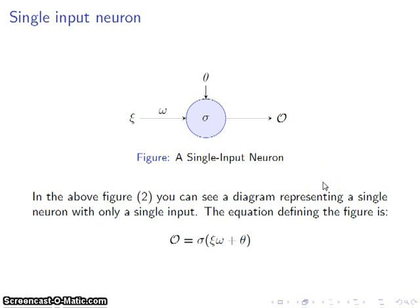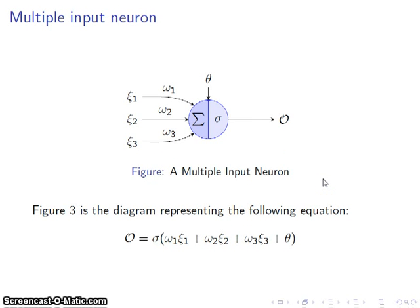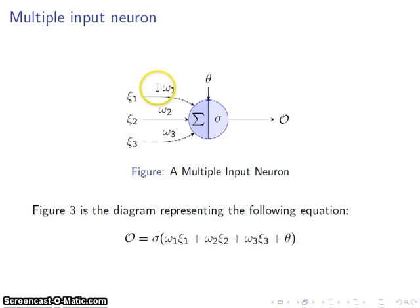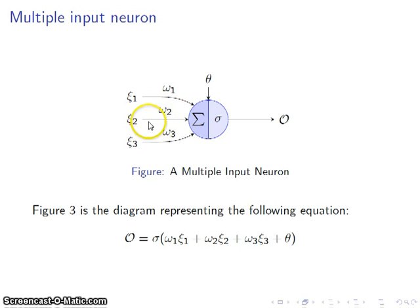Now realistically, there can be several inputs to the neuron, and here's a diagram of that. To compute the output of a neuron in this instance, we're going to look at the input from input 1 multiplied by the weight that connects it to the neuron, add it to the product of the input from our second source times the weight that connects that source to this node, and the same for the third. We're going to go ahead and add all of those up.